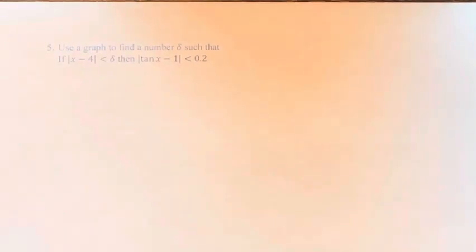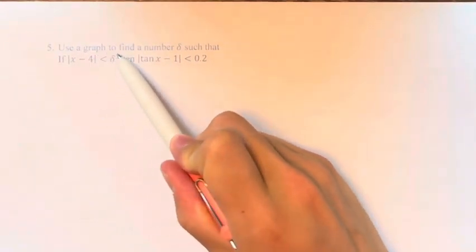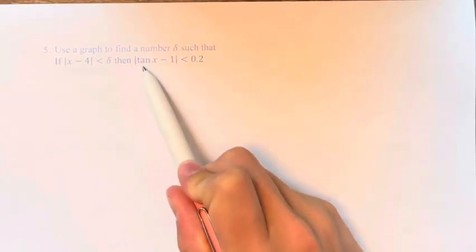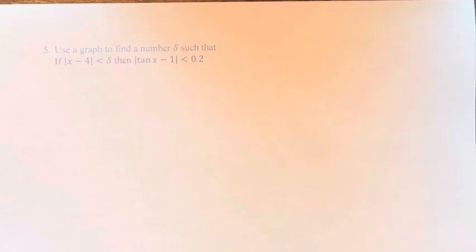Hello and welcome back to another video. In this problem, we're asked to use a graph to find a number delta such that if x minus 4 is less than delta, then tangent of x minus 1 is less than 0.2.